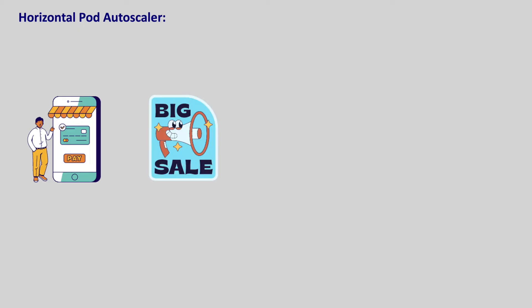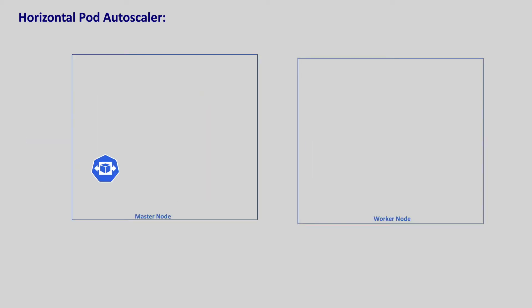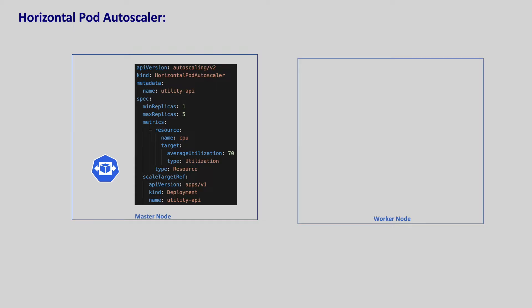Let's say our application is an e-commerce application and on a big billion sale, we get so many orders. When there is such unusual traffic, our application should be able to serve all the users without any downtime. When demand increases, the app should scale up — increasing the number of replicas to stay responsive. And when demand decreases, the app should scale down — decreasing the number of replicas to not waste any resources. But how does Kubernetes know when to scale up or scale down a deployment? Kubernetes offers a resource named HorizontalPodAutoscaler, with which we can instruct Kubernetes when and how to scale our deployment based on a specific metric.